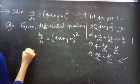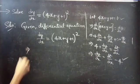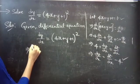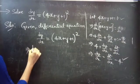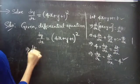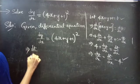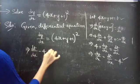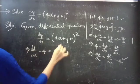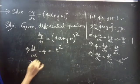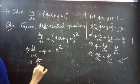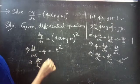Now, replace dy by dx with dt by dx minus 4, and replace 4x plus y plus 1 by t. Then this becomes: the given differential equation becomes dt by dx minus 4 equals to t squared. Then, dt by dx equals to t squared plus 4.